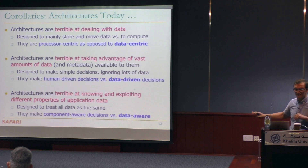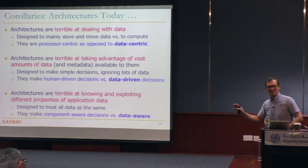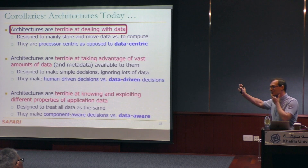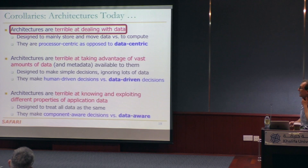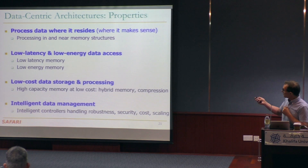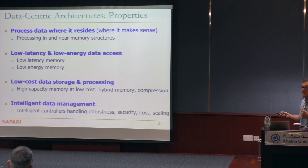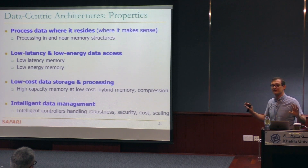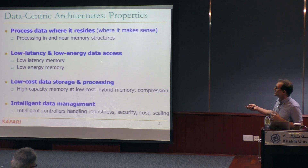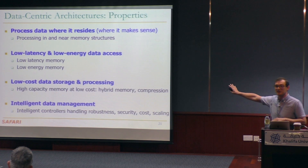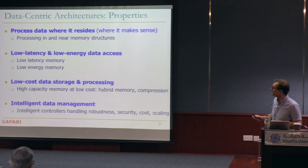My goal is to cover these three different directions. I'm going to spend most of the time on the first one because we've done the most work there. I'll talk about data-centric or memory-centric architectures. These are some properties I believe data-centric architectures should possess: we should process data where it resides, minimize data movement, treat data as the first-class citizen, and process data where it makes sense. This leads to processing in and near memory structures. We should also have communication structures — we should really process data while it's moving and while it's stored.